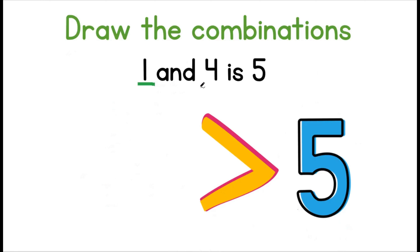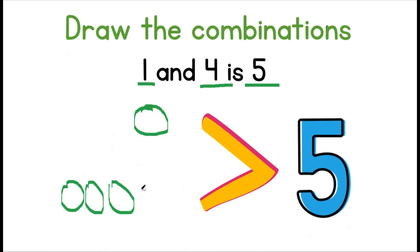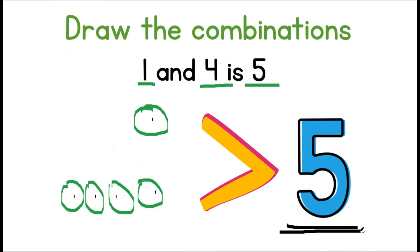One and four is five. We draw one, then one, two, three, four. Let's count them all together: one, two, three, four, five. One and four gives us five.